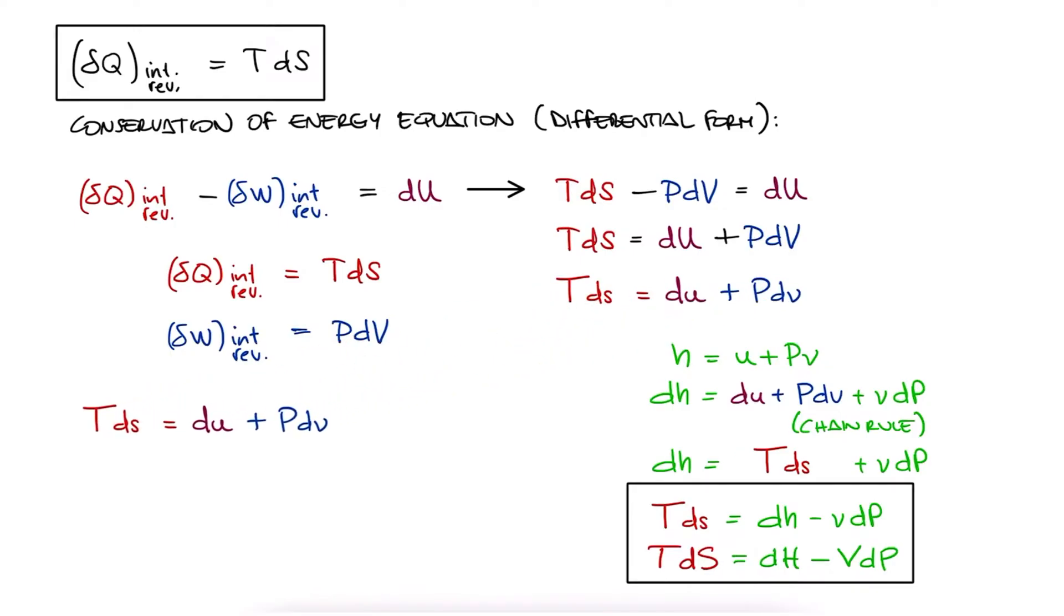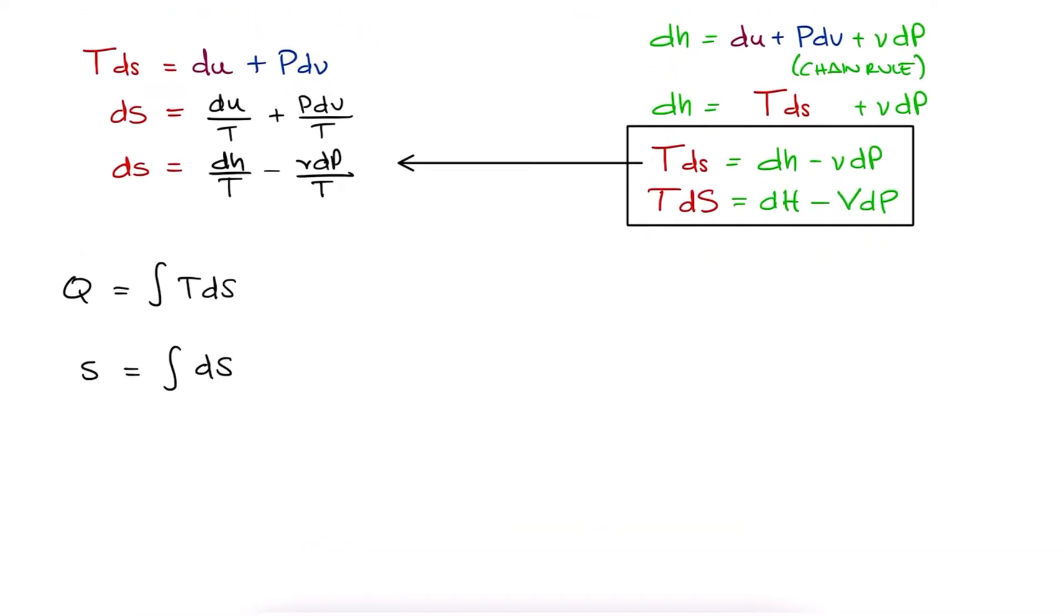From the first expression, we can write ds as du over T plus Pdv over T, or from the last equation ds is dh over T minus Vdp over T. So these two TdS relationships help us because if we want to integrate TdS, or even just integrate ds to find the change in specific entropy,